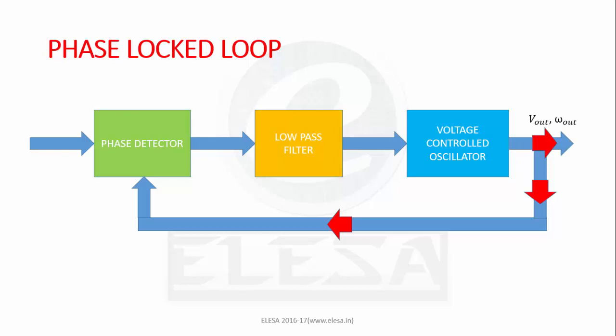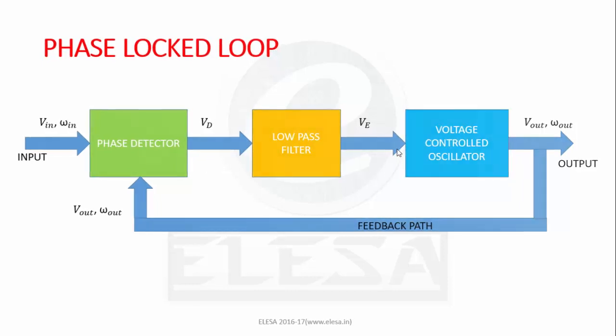When ω_in changes, the phase shift between V_out and V_in will start to increase, changing V_d output of phase detector and hence the control voltage V_E which is DC.